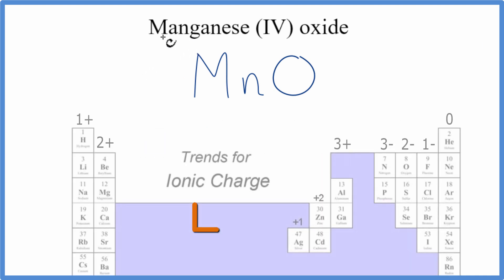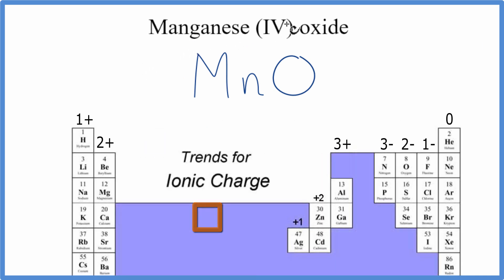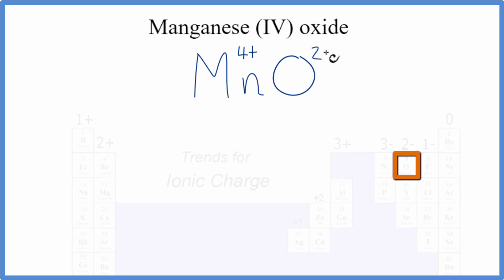We have a little bit of help here because manganese is a transition metal, so in the name, we have the charge already written. This Roman numeral IV tells us we have a 4+ ionic charge on the manganese. On the periodic table, we look at oxygen, that's 2-.